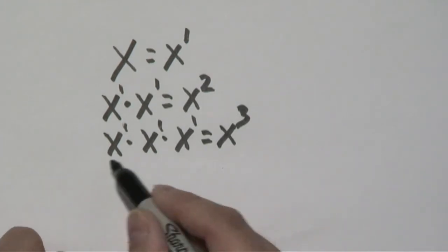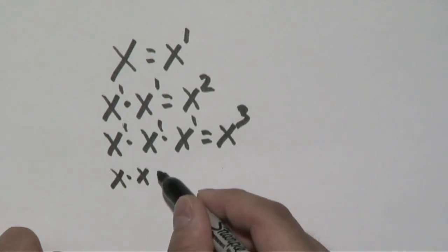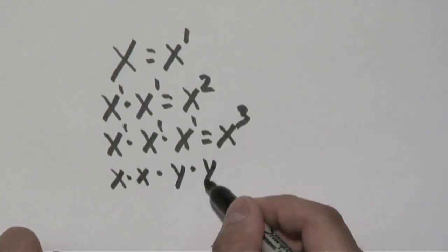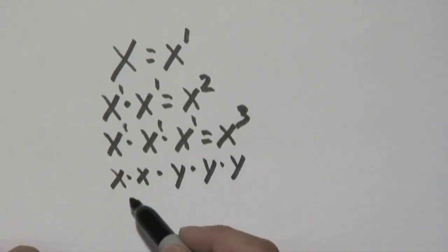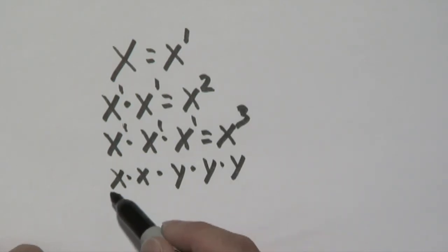For example, once they get to this stage, they can apply things like x times x times y times y times y, and they'll be able to understand that different bases will have different exponents possibly.